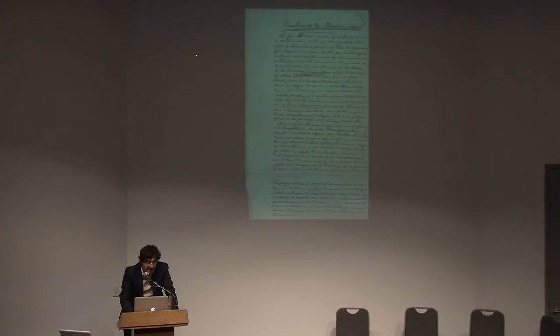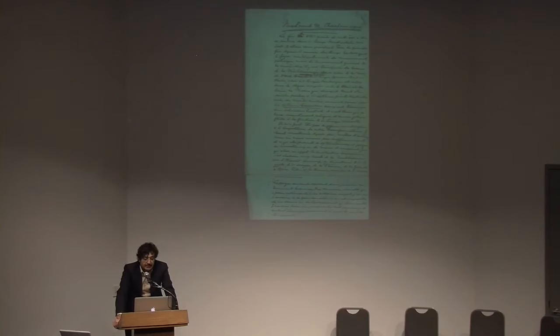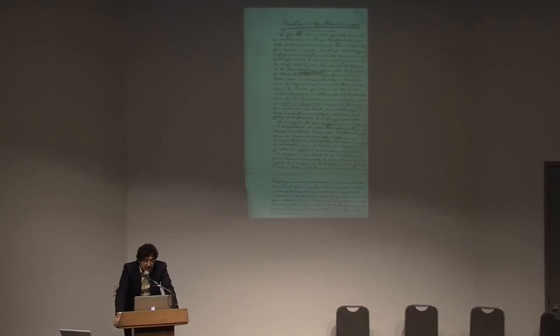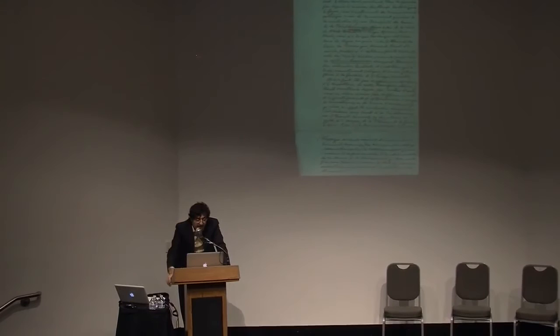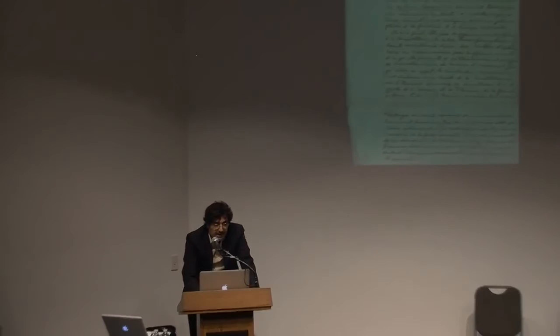Most of Pirenne's thought seems to appear already in his no less influential book Medieval Cities: Their Origin and the Revival of Trade, first published in English in 1925, based on a series of lectures delivered between October and December 1922 in several American universities. Most of his Muhammad and Charlemagne ideas were formulated in the first chapter, 'The Mediterranean,' of this book, whose closing paragraph already emphasized the main thesis.